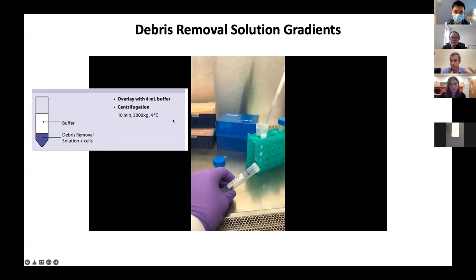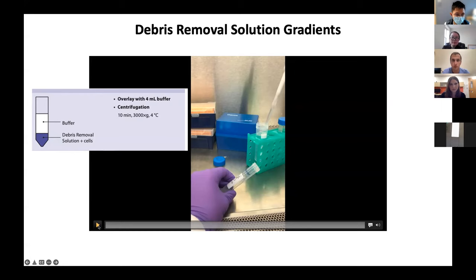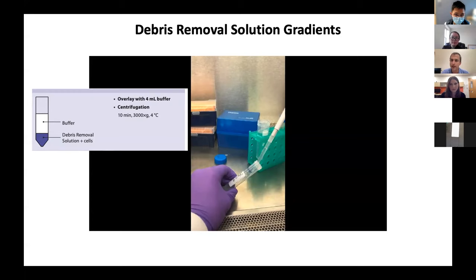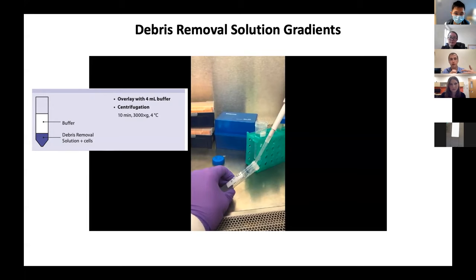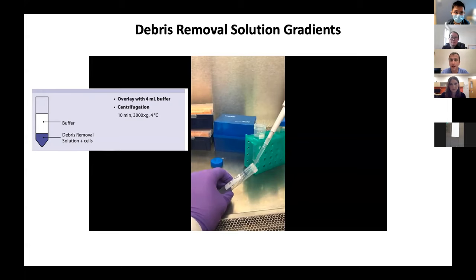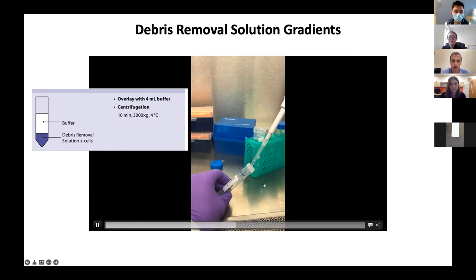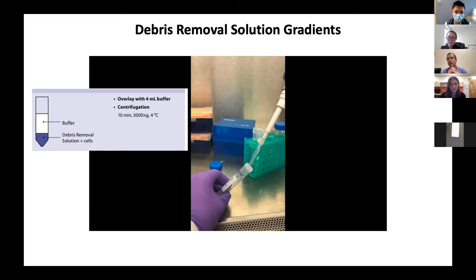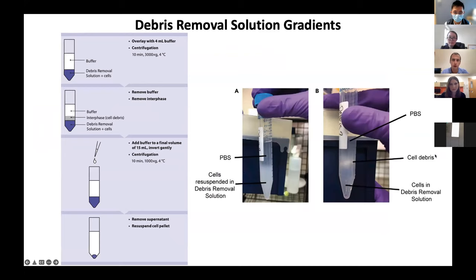You simply resuspend your cell pellet in a mixture of the debris removal solution and ice cold PBS, then gently overlay more PBS. It's incredibly important to do this gently and slowly, as the interface of the gradient is where removed cells and debris locate. A useful trick: start at a 45-degree angle, then slowly bring the tube more vertical as you raise the PBS volume, which allows for a more distinct gradient. You can centrifuge at around 3000 g for 10 minutes with relatively high acceleration and brake, saving time compared to normal gradient centrifugations.